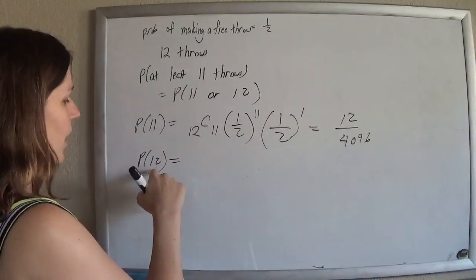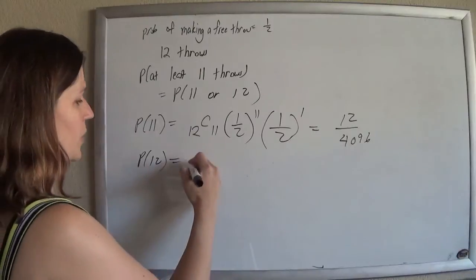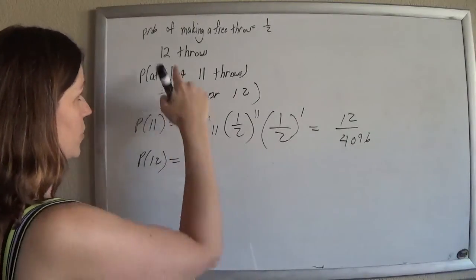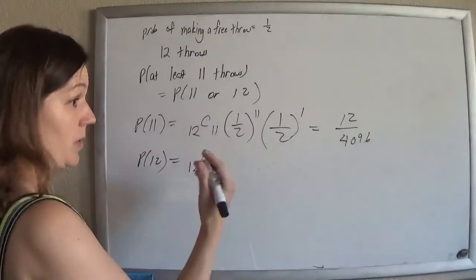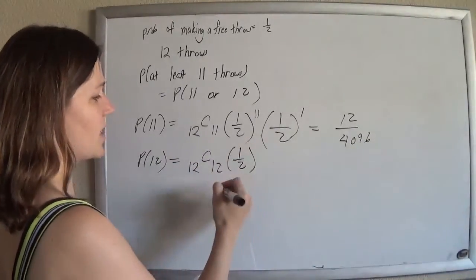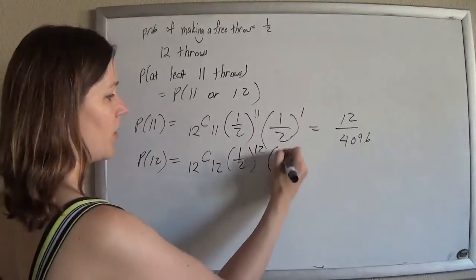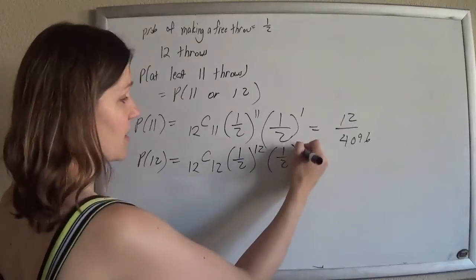We do it again. So the probability of making exactly 12, there are 12 throws. I want to choose all 12 of them to make. There's a half a chance of making a shot. I want to make all 12 of them. Half a chance of not. I want none of those.